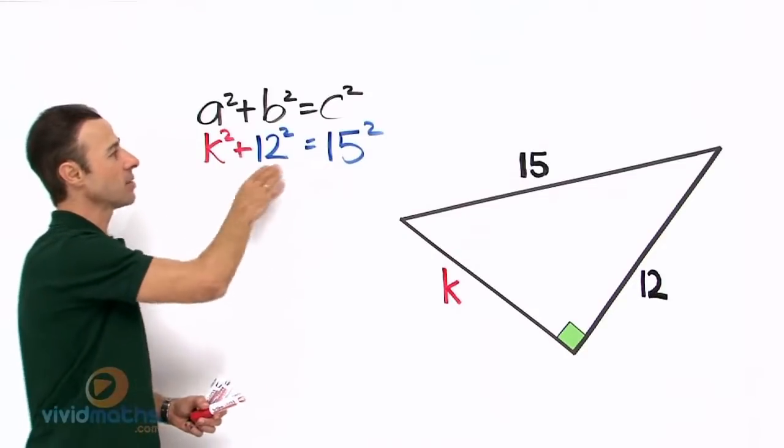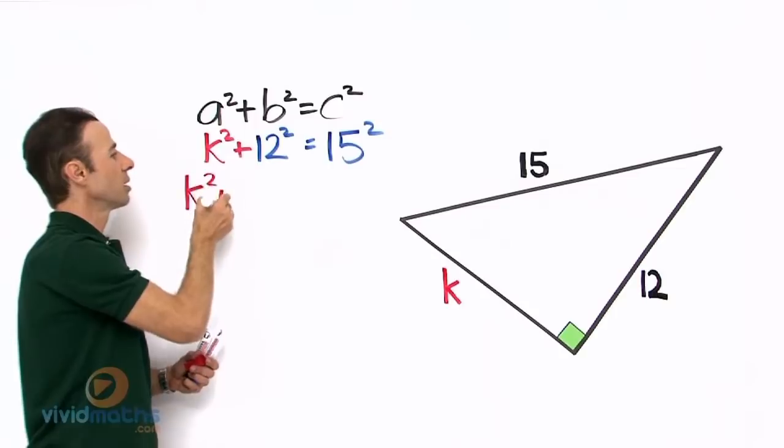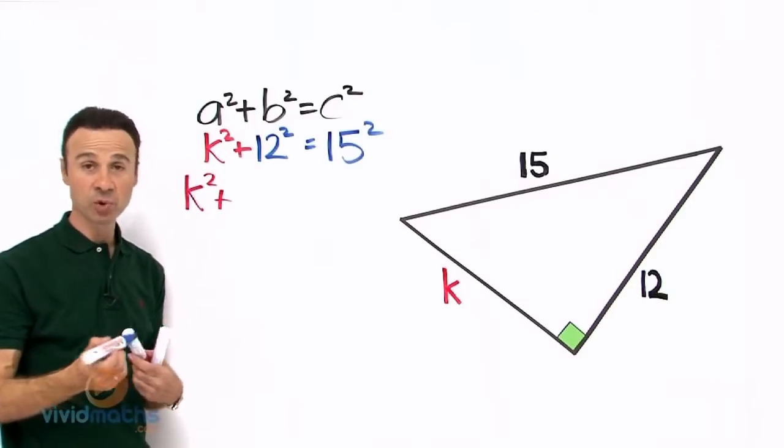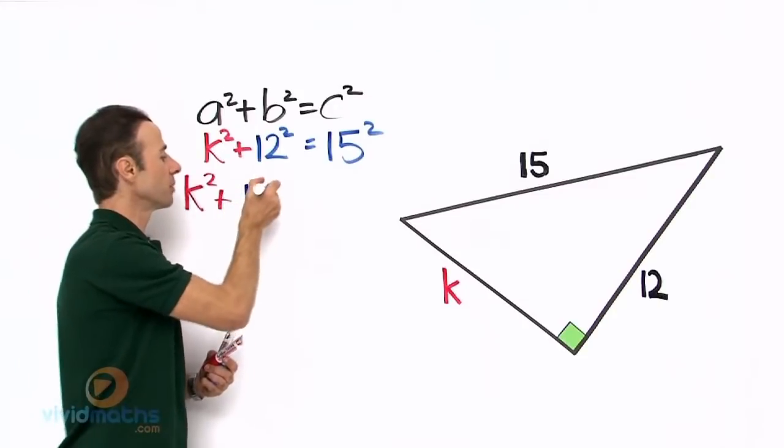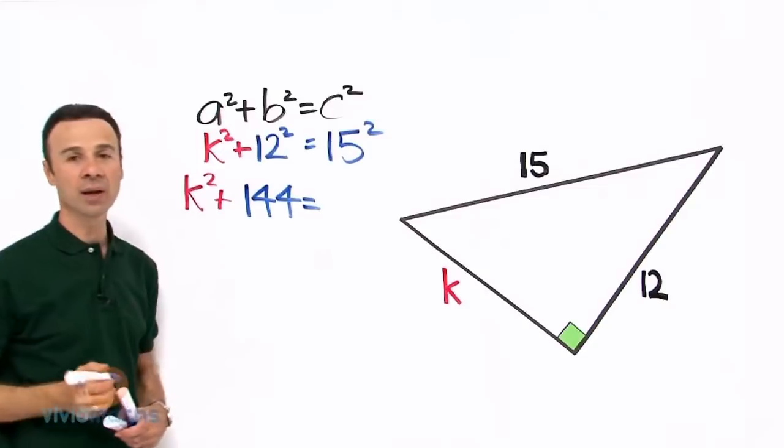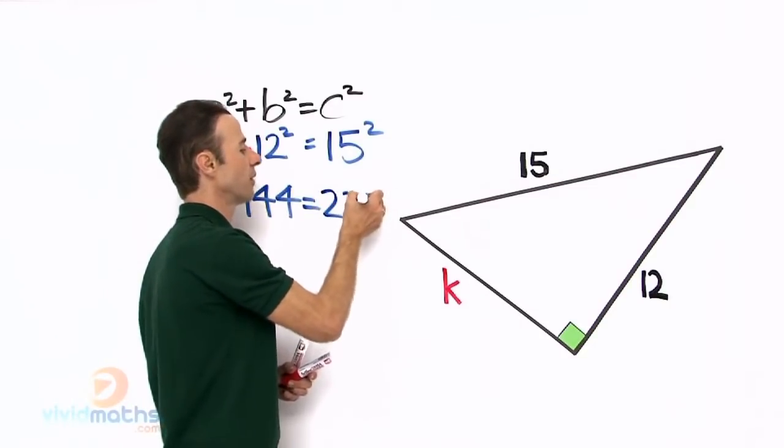Now let's expand the squares. That gives us K² + 12², and on the calculator or if you remember, 12 × 12 is 144. That equals 15², which is 225.